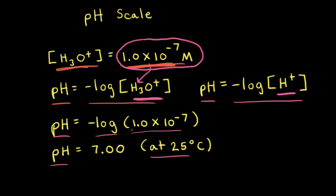Notice that there are two significant figures for the concentration and two decimal places for the final answer. That's because for a logarithm, only the numbers to the right of the decimal point are significant figures. Therefore, two significant figures for a concentration means two decimal places.